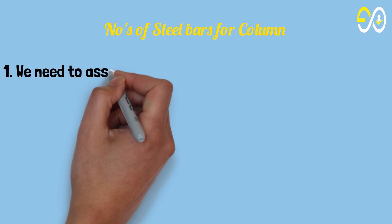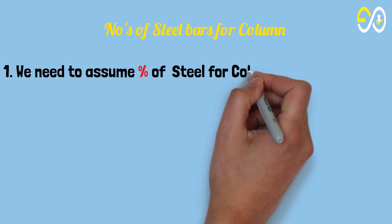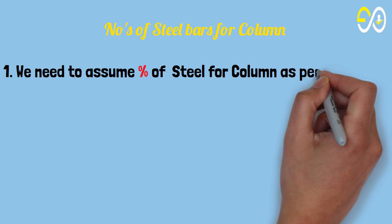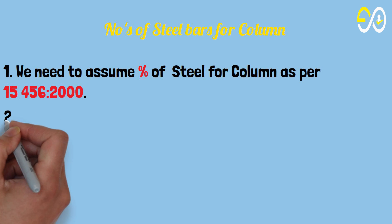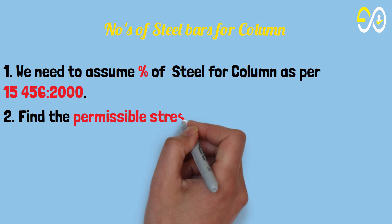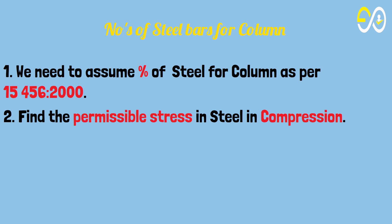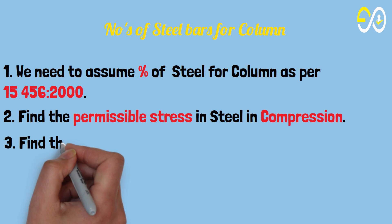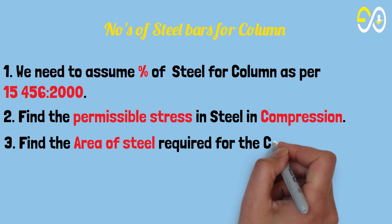1. We need to assume percent of steel for column as per IS 456:2000. 2. Find the permissible stress in steel in compression. 3. Find the area of steel required for the column.